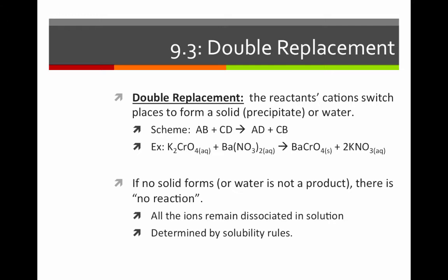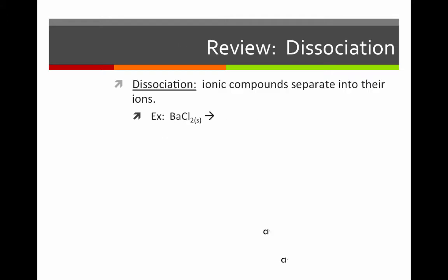How do we determine if a solid forms? We use the solubility rules. Recall that when we put ionic compounds in water, they separate out into their positive and negative ions, or dissociate. For instance, if we put barium chloride in water, the solid barium chloride will dissociate in the water to form Ba2+ aqueous barium ions.